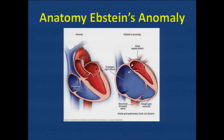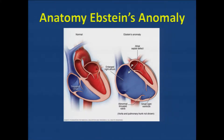This diagram of Ebstein's anomaly from a basic textbook is actually probably wrong. Ebstein's anomaly predominantly affects the septal leaflet and the posterior leaflet of the tricuspid valve. The anterior leaflet usually is attached right at the annulus but is really, really long. The other two leaflets are little nubbins down near the apex of the heart, and this big, long sail-like anterior leaflet makes up for the defective length of those other two leaflets.